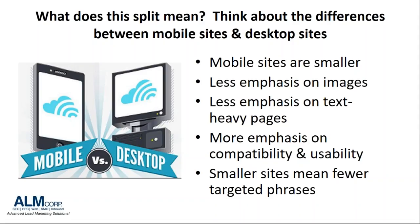You can't take advantage of volume on a mobile site the way you can on a desktop site. There's also less emphasis on images and on text-heavy pages. Right now, there's a rule of thumb that you need 250 to 500 words of content for best SEO practice, but on mobile that's not the case. It's going to be about brevity - saying what you mean within as few words as possible. There's going to be more emphasis on compatibility and usability.